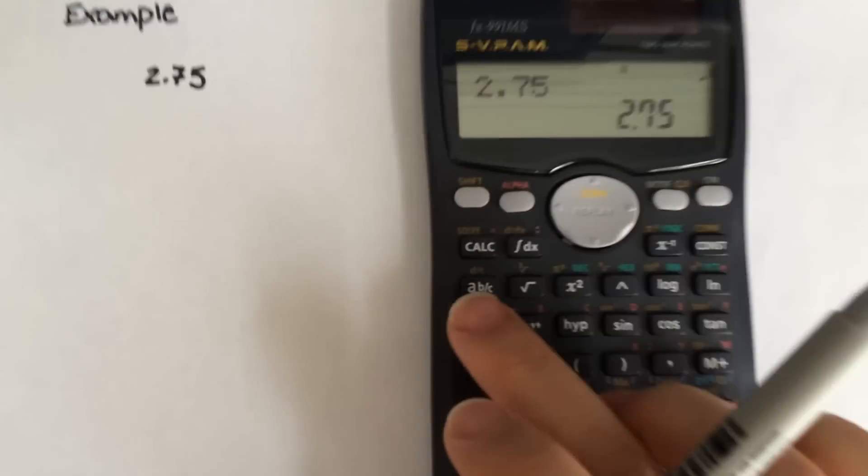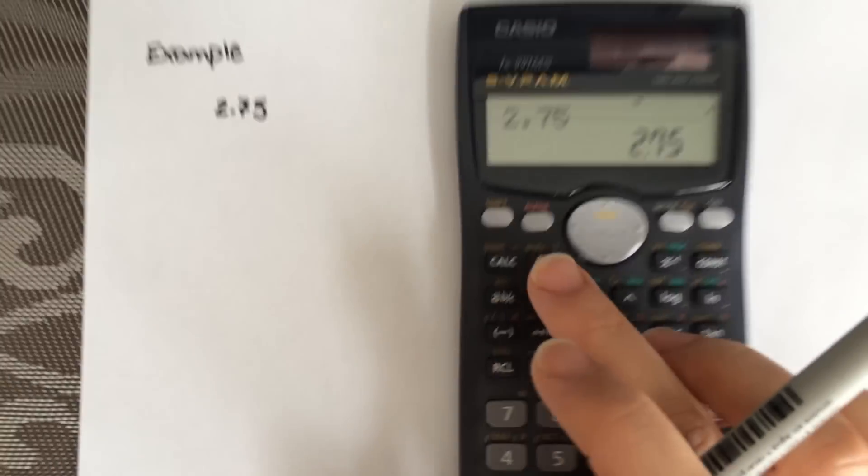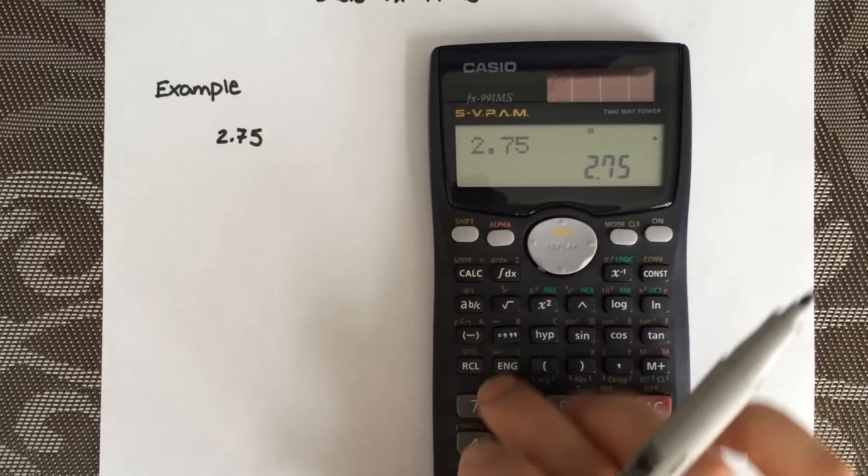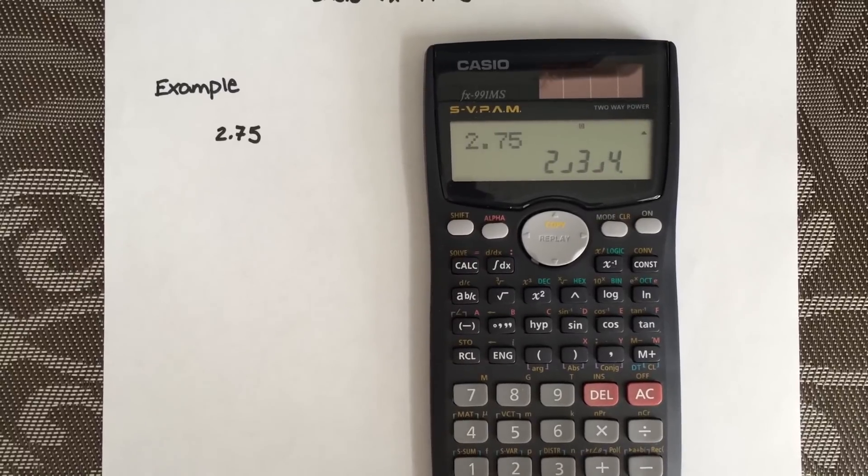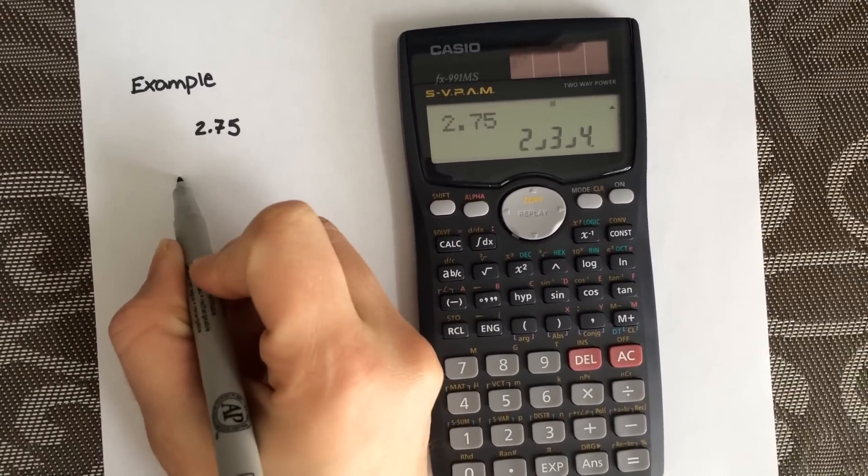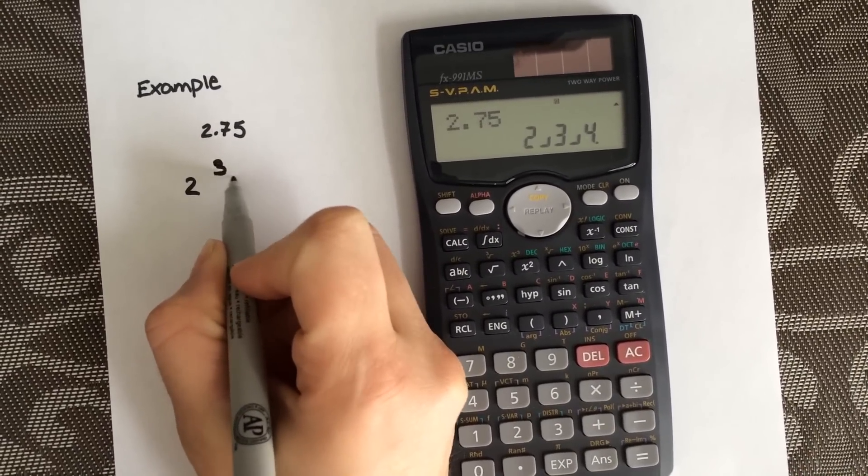Then you're going to see this button here, AB over C. Select that button. There you go, you have a mixed fraction of 2, 3 over 4.